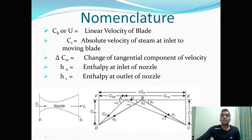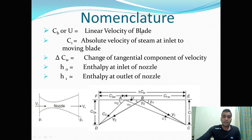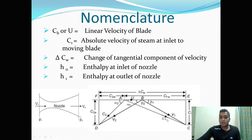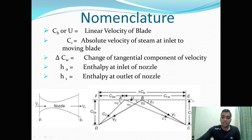Let us start with nomenclatures used in impulse turbine. CV or U represents the linear velocity of the blade, as shown on the velocity diagram of impulse turbine — the arrow from A to B represents your linear velocity of blade. C1 is the absolute velocity of steam at inlet to moving blade, or the velocity of steam at exit of your nozzle, shown on the diagram from A to C and marked with the arrow C1. Delta CW is the change of tangential component of velocity, shown on the diagram from F to E.